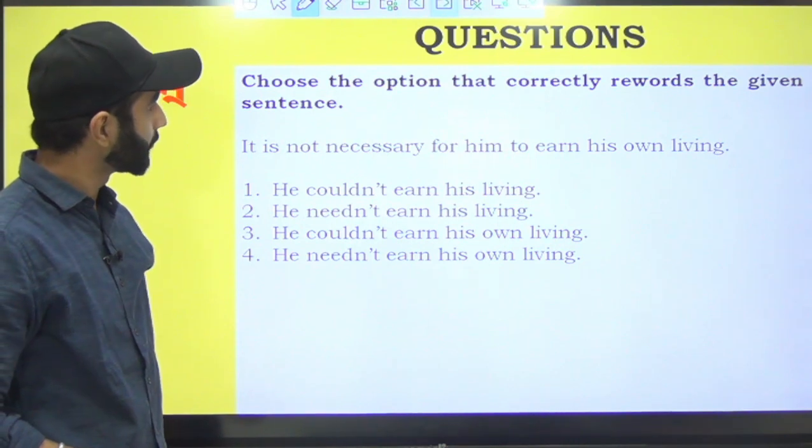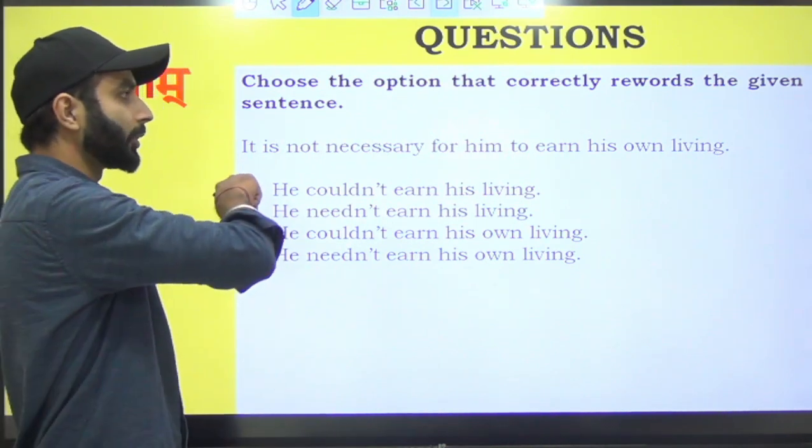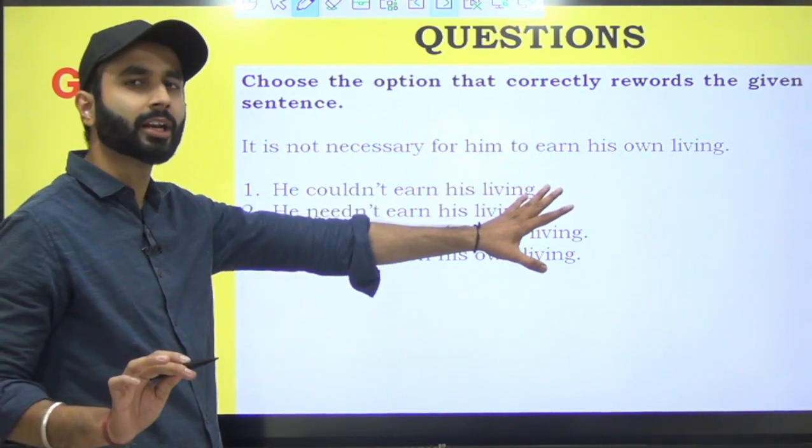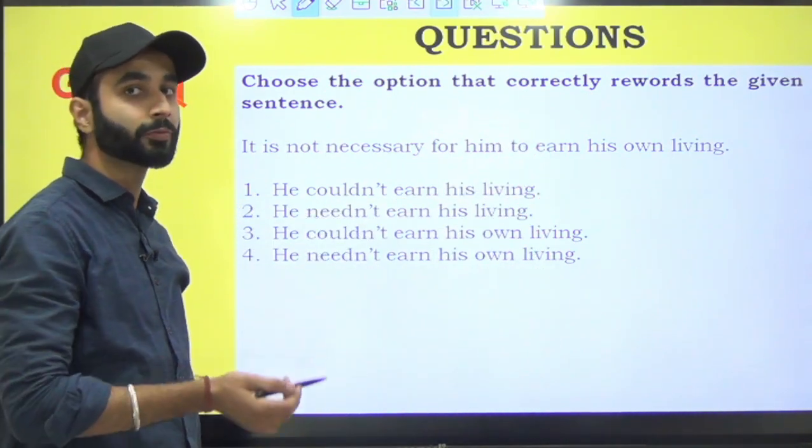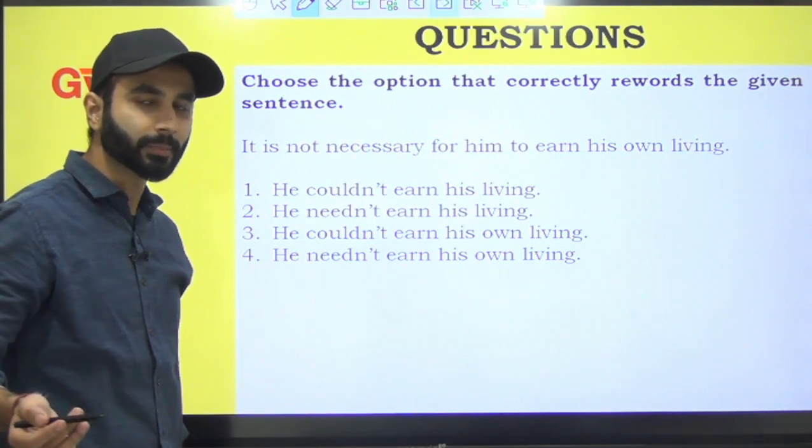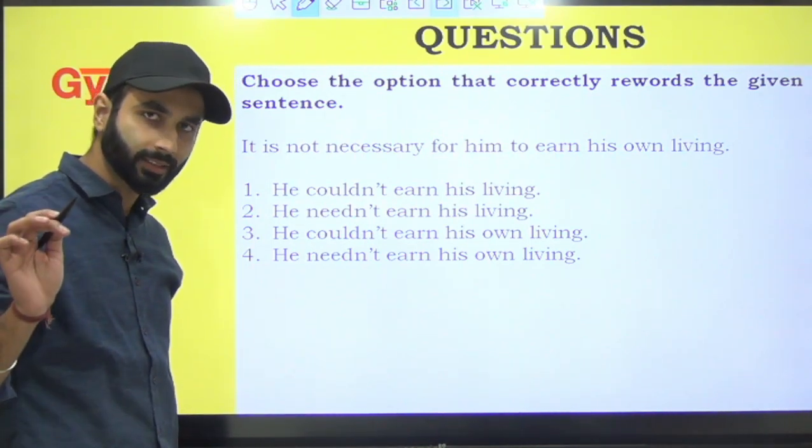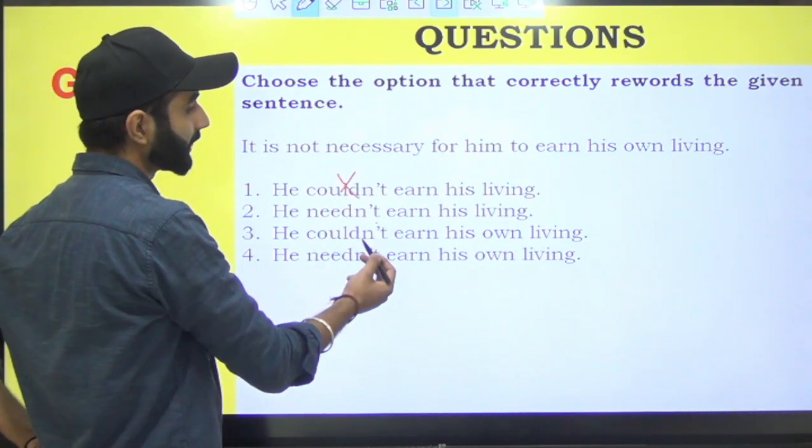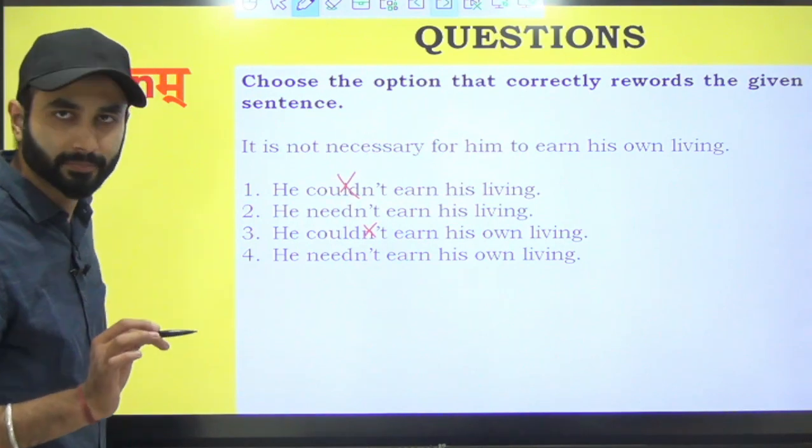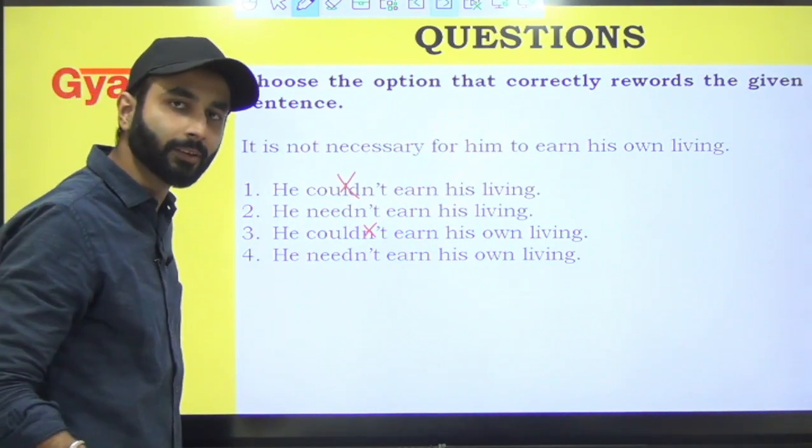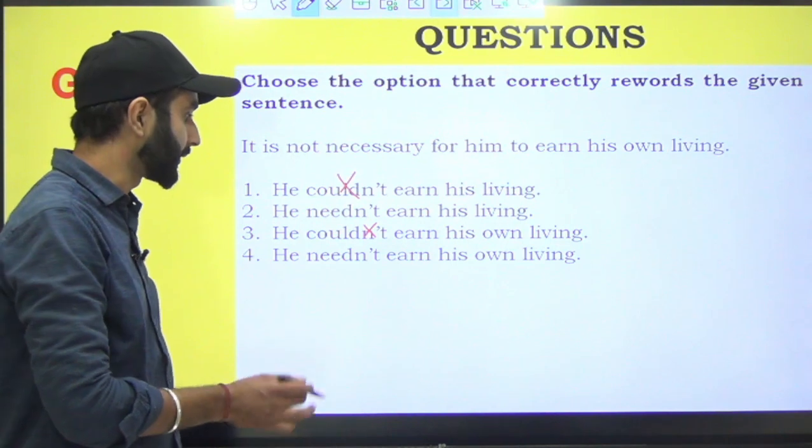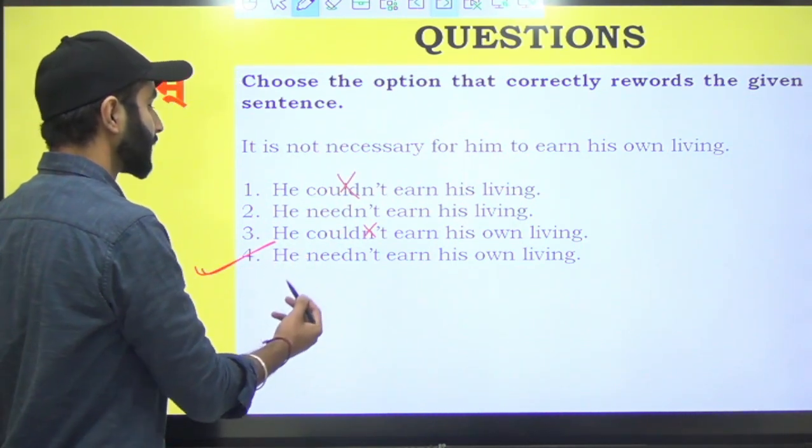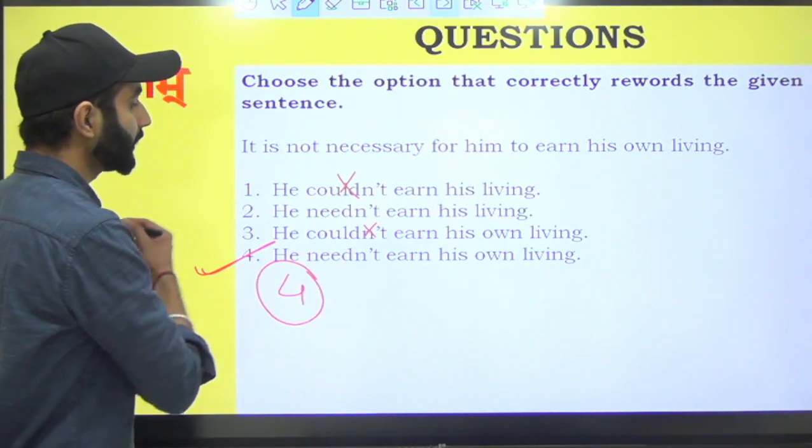Select the option that correctly rewords the given sentence. It is not necessary for him to earn his own living. Uske liye zaruri nahi ki apna kharcha earn karna padega. We can say he is from a good family. Usko kharcha earn karne ki zaroorat nahi. Could not earn? Hum uski ability pe shak nahi kar sakte. You don't know how capable that person is. So he need not earn his own living.